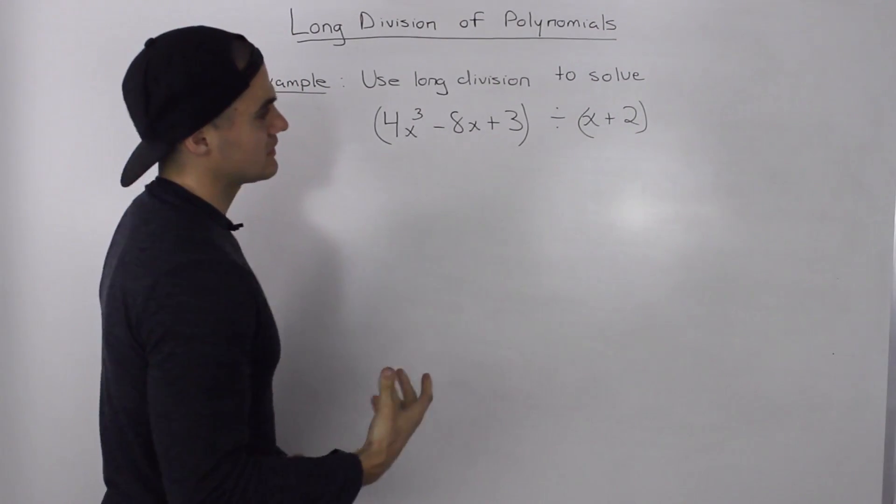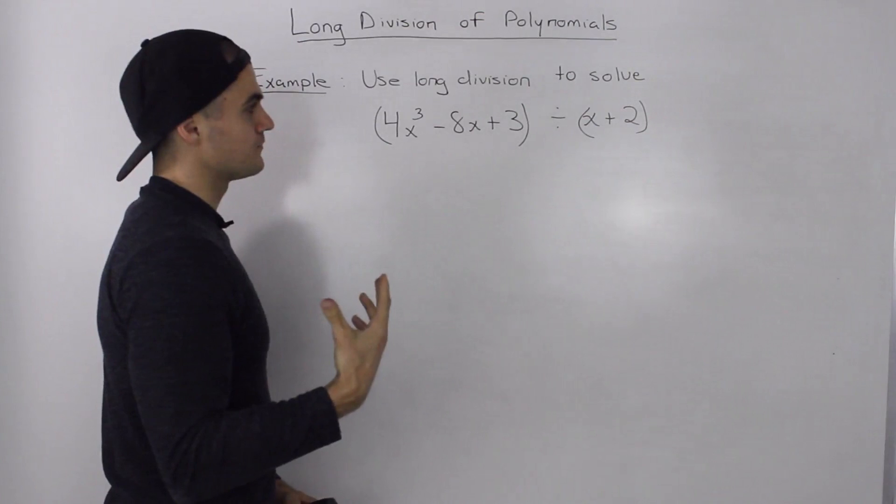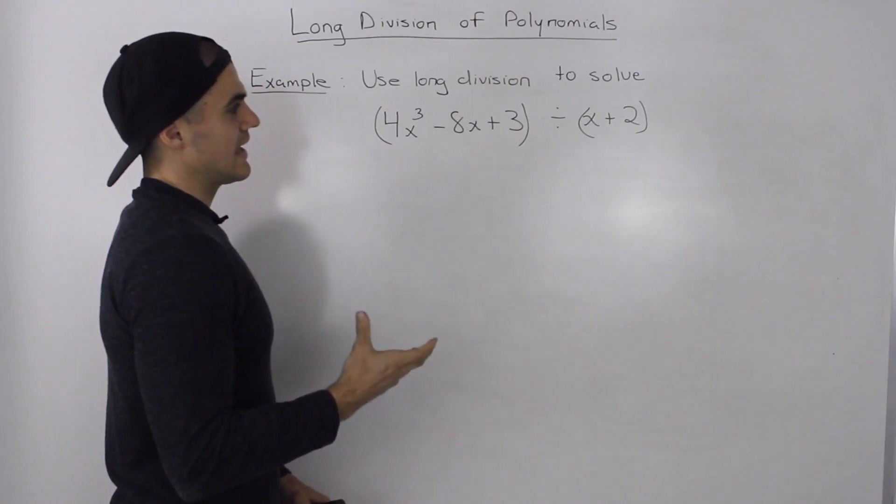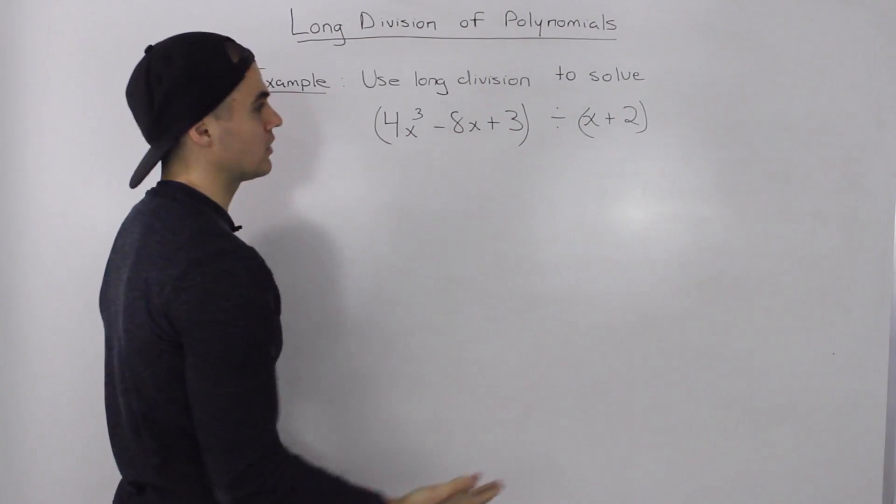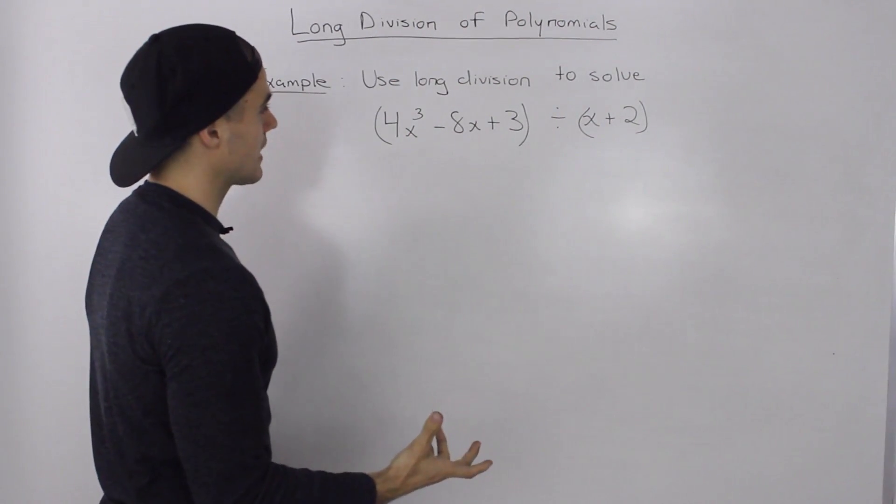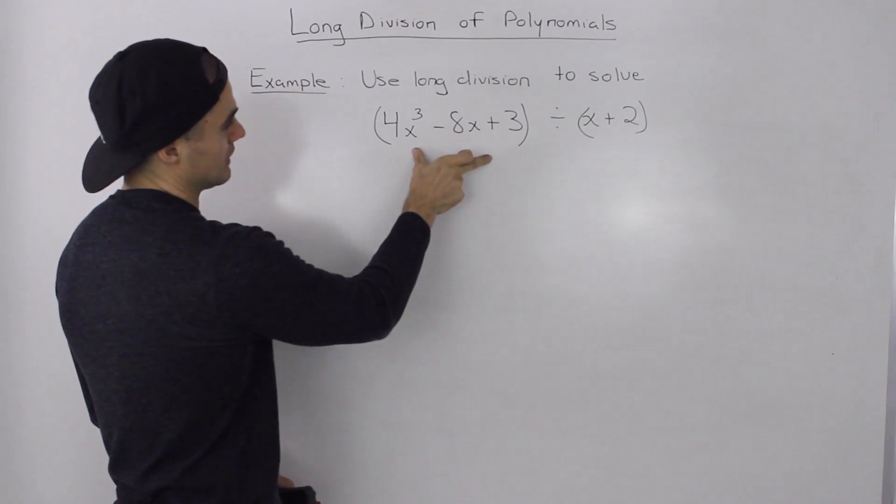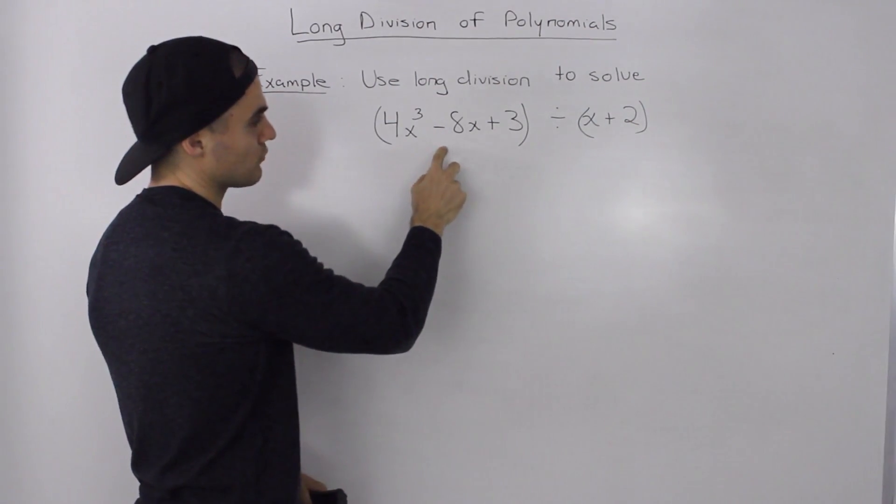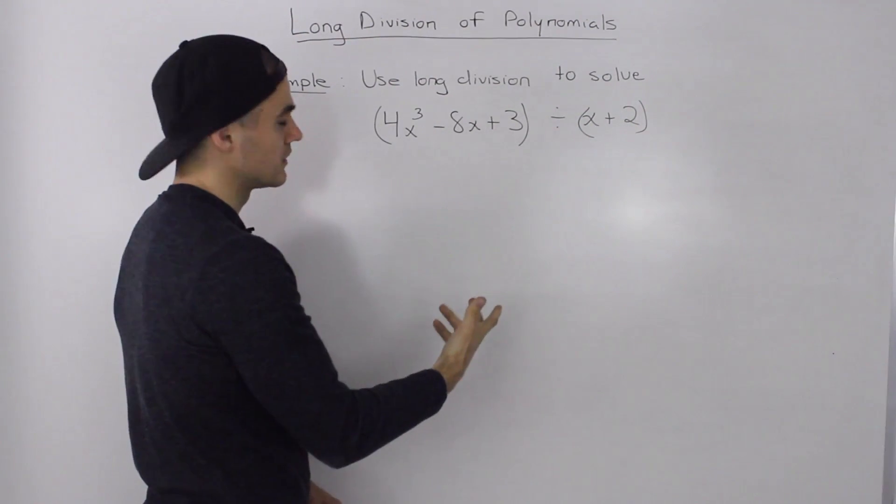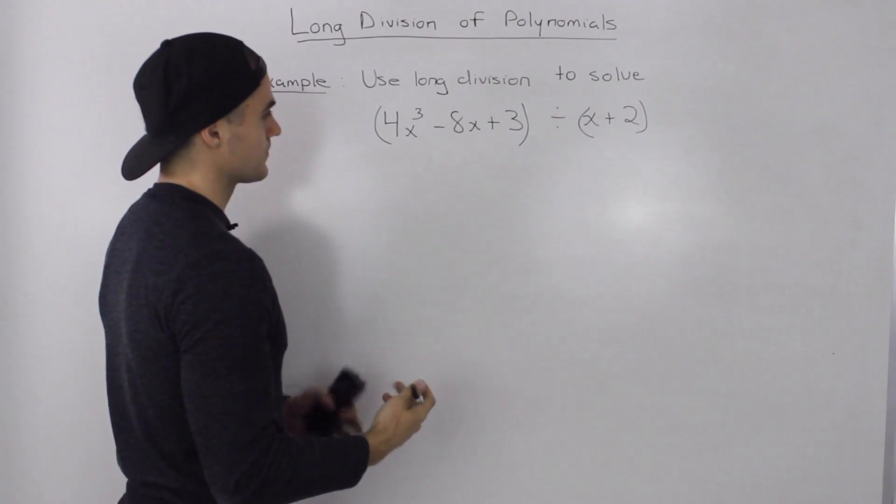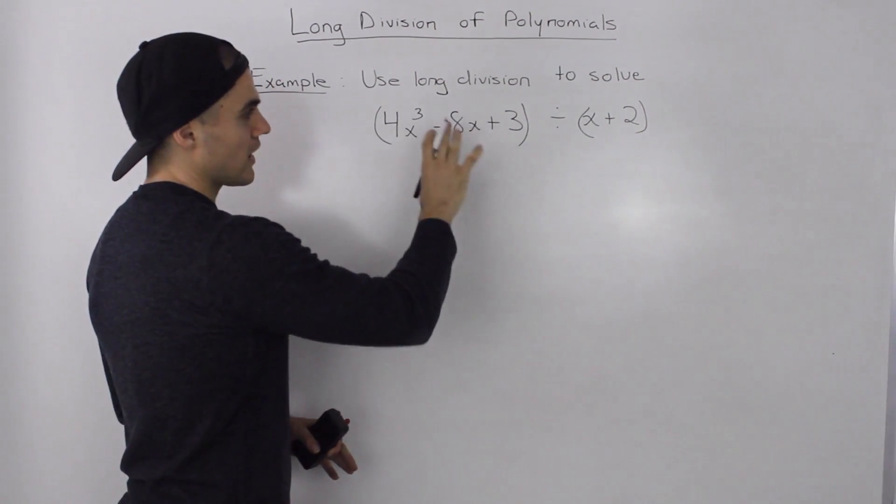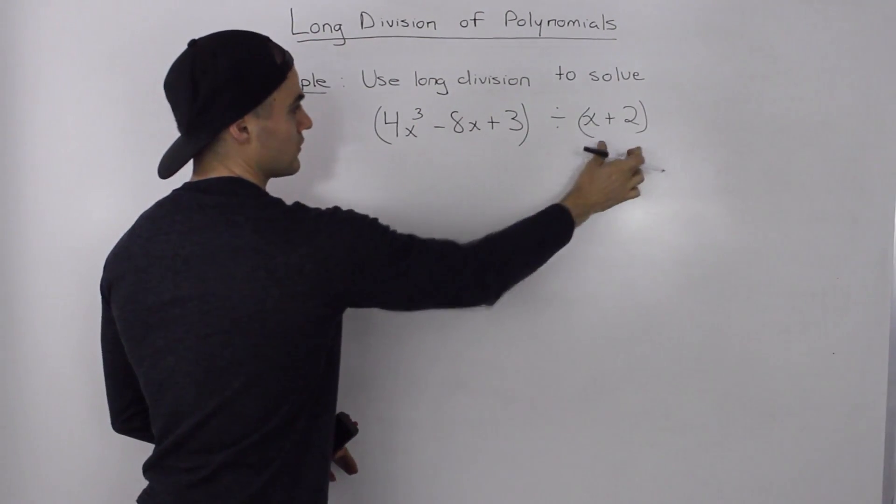Now, in the examples that we did before, we always had a leading coefficient for every degree in the polynomial. But notice now how in the dividend, there is no term for x squared. So whenever you run into a situation like this, you want to rewrite whether the dividend or the divisor. And for any degree that's missing, you want to put a 0 as a leading coefficient.